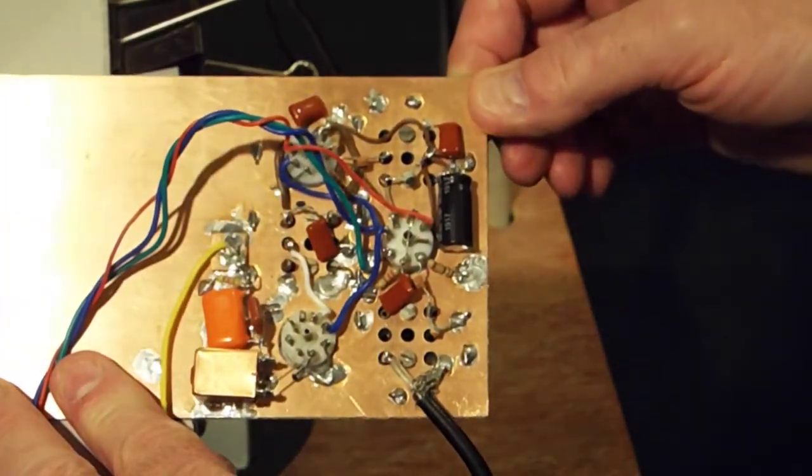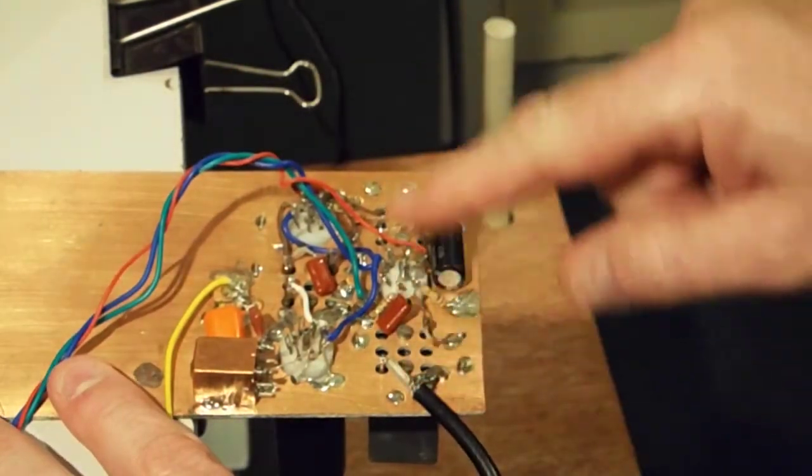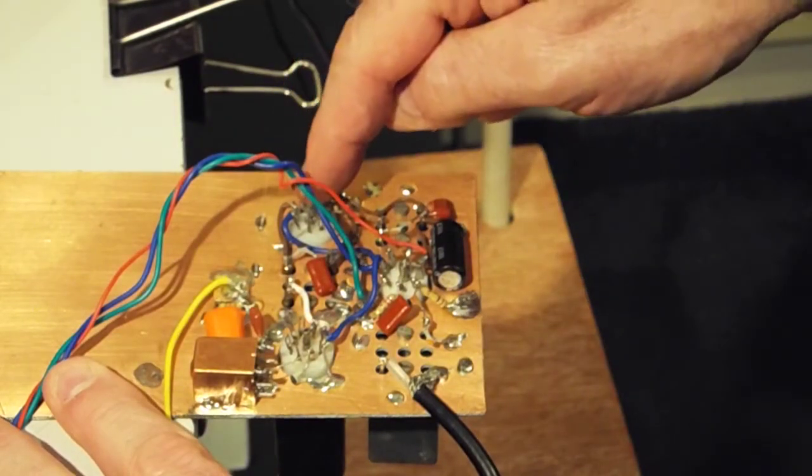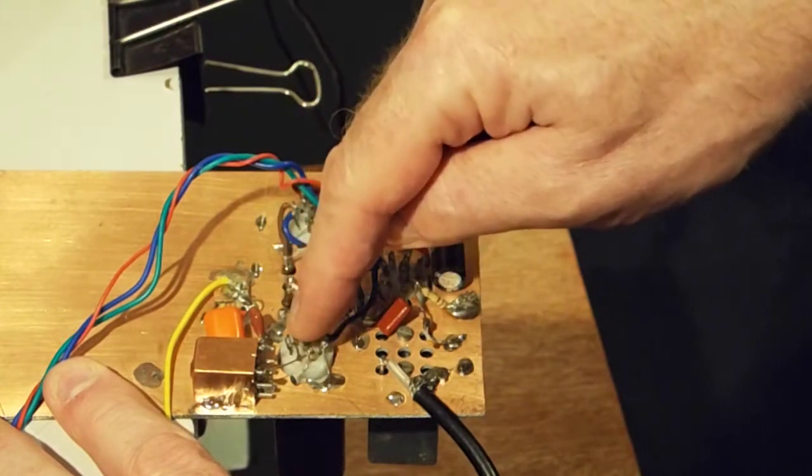Not the best construction. So we have input EF-91, transformer EF-91, transformer CV-4007.